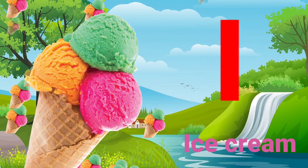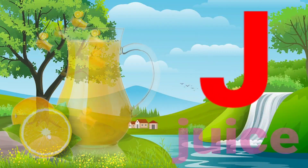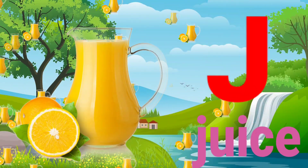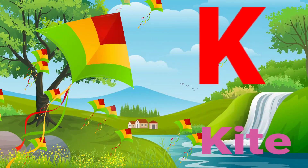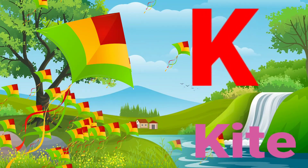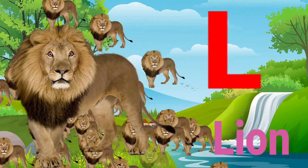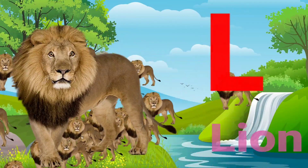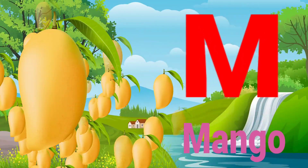I. I for ice cream. J. J for juice. K. K for kite. L. L for lion.